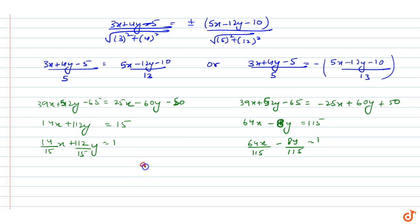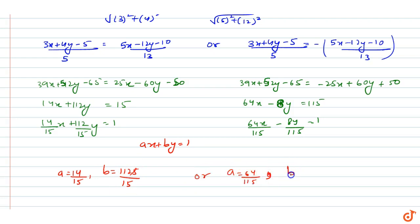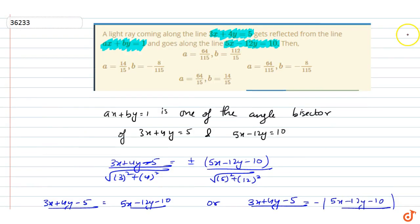Comparing with ax + by = 1, we get two possible solutions: a = 14/15, b = 112/15, or a = 64/115, b = −8/115. The correct answer is option C: a = 64/115 and b = −8/115.